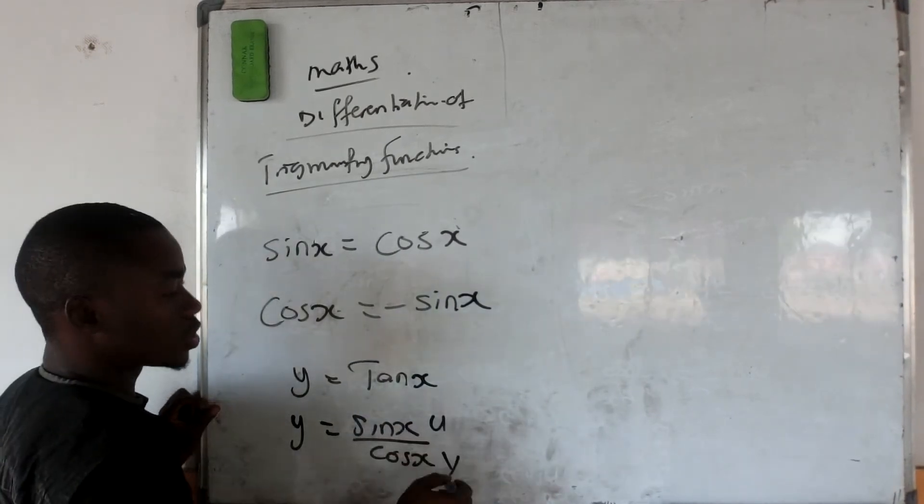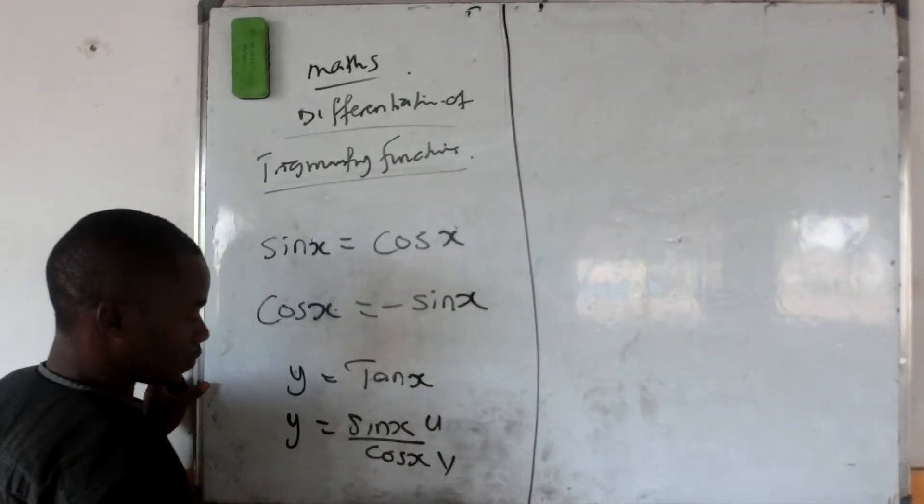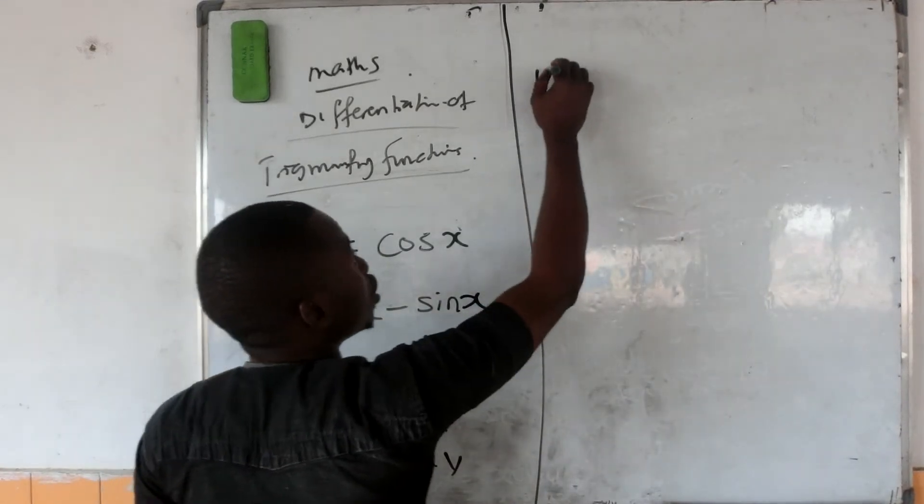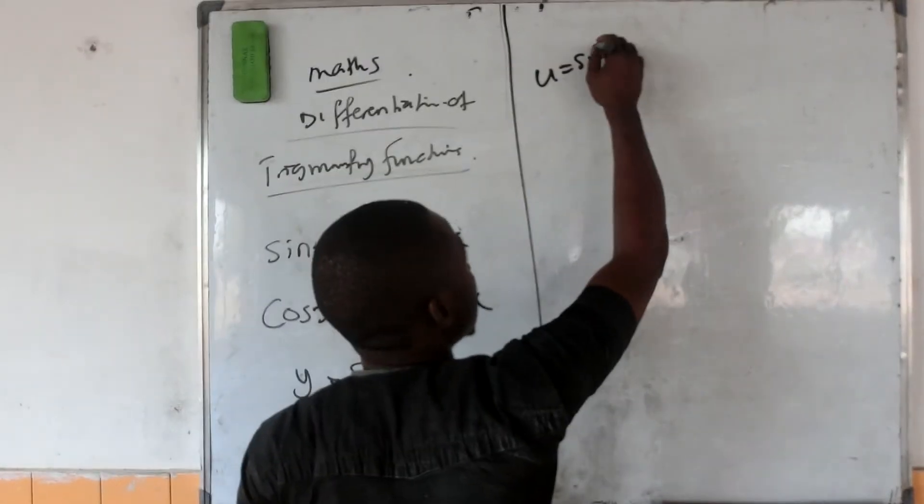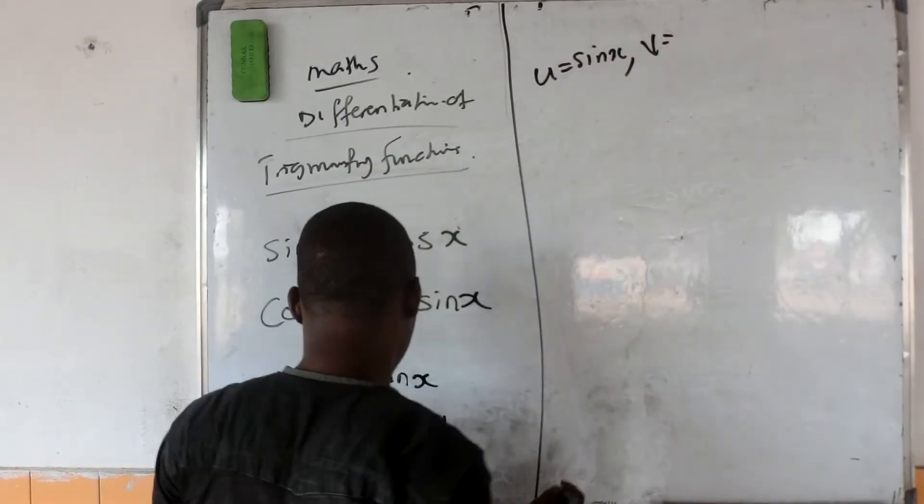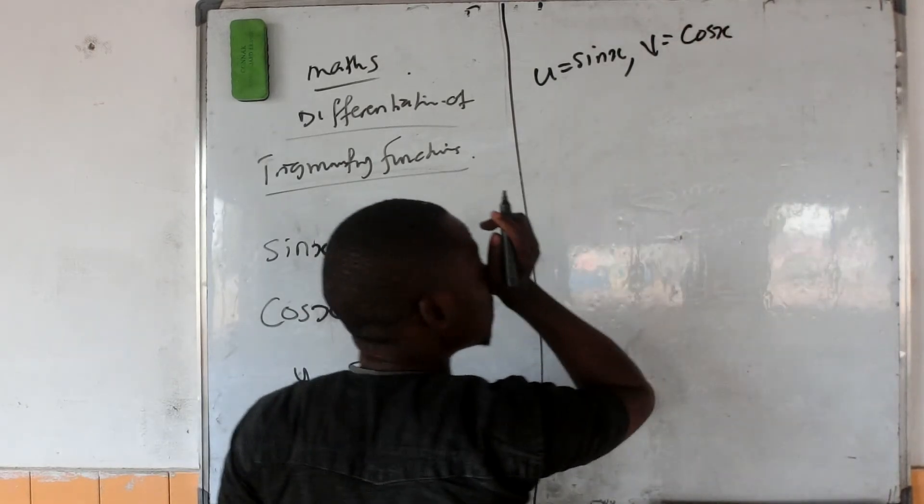Now you choose this one as u and you choose this one as v. So what it means is that u is equal to sin x and v is equal to cos x.